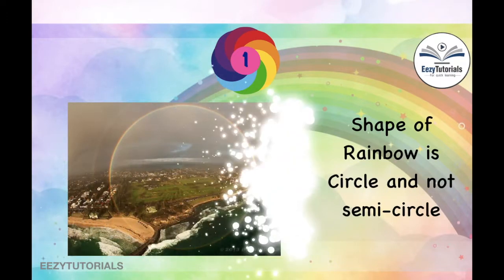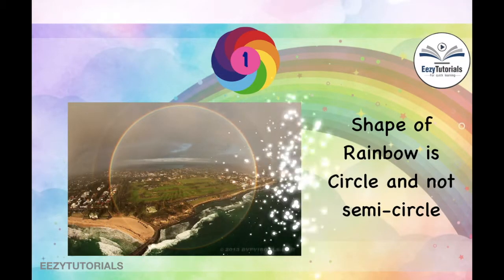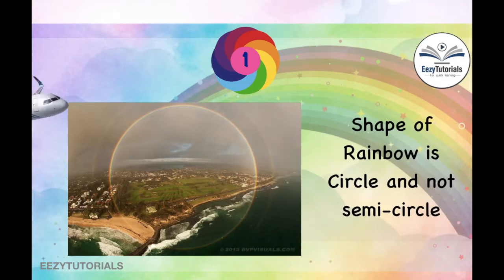Rainbow facts: The shape of the rainbow is a circle and not a semicircle as we normally see it. We can see the circular shape when we view rainbows from an aeroplane.